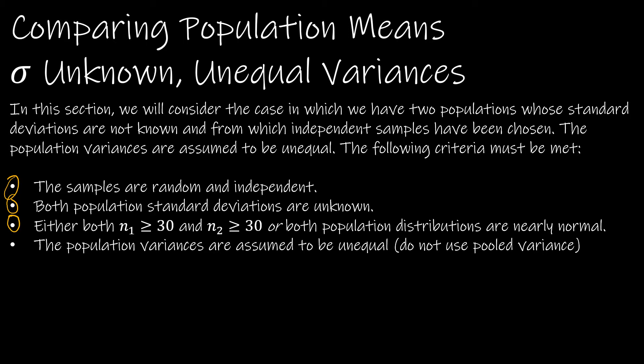This one is the same as last time: either both sample sizes are greater than or equal to 30 or both population distributions are nearly normal. And this one is key in this particular situation: the population variances are assumed to be unequal. What that means is when we find the variance, which is the standard deviation, which is part of our standard error, we're not going to use a pooled variance.